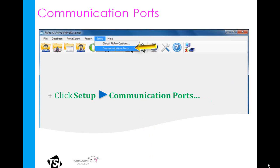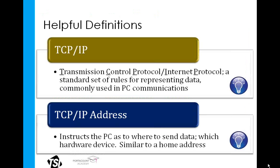Go to Setup and click on Communication Ports. You could also click on the icon across the top of FitPro — the icon with the USB symbol in front of the globe, fourth from the right. The FitPro software should automatically search for a connected Port Account Pro unit. If the fields in the Select Address window are populated with the necessary information, then we have successful communications with the Port Account. At this point, you can select Save and Exit.